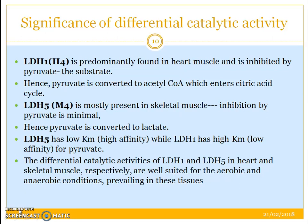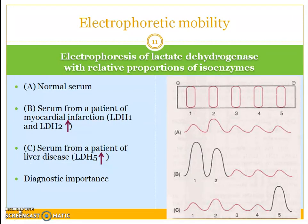LDH1 is predominantly found in heart muscle and it can be inhibited by pyruvate. Therefore, pyruvate can be converted to acetyl-CoA, which enters the citric acid cycle. But LDH5 is present in skeletal muscle and its inhibition by pyruvate is minimal — therefore pyruvate can be converted to lactate. LDH5 has a low Km value, whereas LDH1 has a high Km value for pyruvate. Using electrophoretic mobility, LDH1 and LDH2 quantities increase in cases of myocardial infarction, whereas LDH5 values are increased in cases of liver diseases.